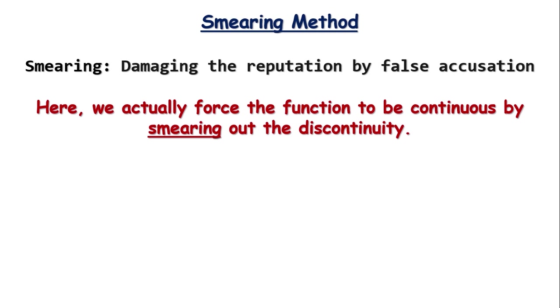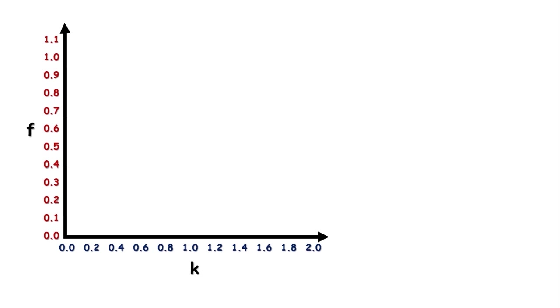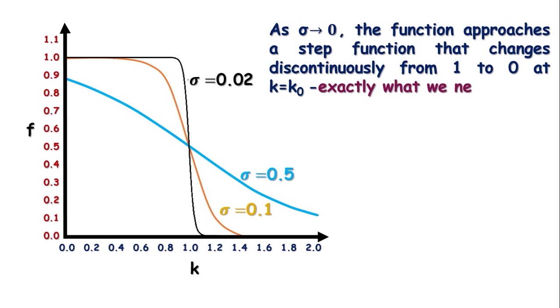Of course, we need an example. Without example, nothing is complete. Example of a smearing function is f of k minus k0 equals to exponential k minus k0 by sigma plus 1 whole to the power minus 1. If we plot this function for different values of sigma, the graphs look like this. It is the graph for sigma equals to 0.02, this one for sigma equals to 0.5 and this is for sigma equals to 0.1. One important feature of this graph is, as sigma goes to 0, the function approaches a step function that changes discontinuously from 1 to 0 at k equals to k0. And this is exactly what we need, an abrupt change, but using a continuous function.